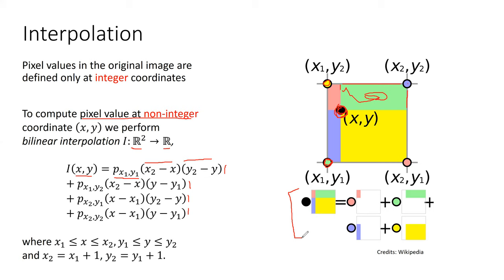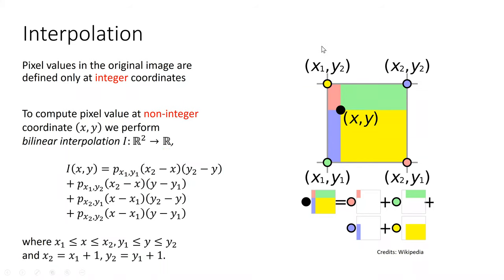This is bilinear interpolation. As you can see, it is nonlinear in x, y — I'm multiplying x and y together. So it's a nonlinear function. This already tells you that if you're trying to approximate this function, it may not be so direct with convex relaxations. So we have our transformations like rotations, translation, and so on, captured by the bijective function T_kappa, and we have a way to compute pixel values at non-integer coordinates.